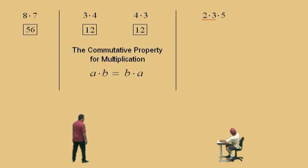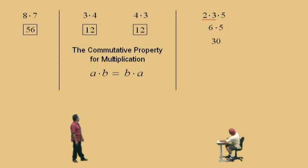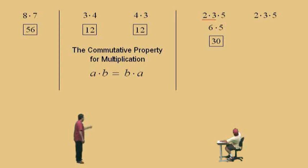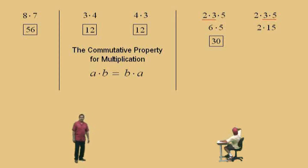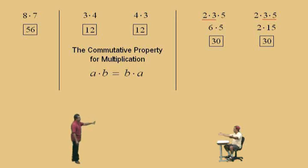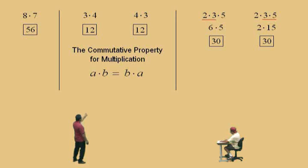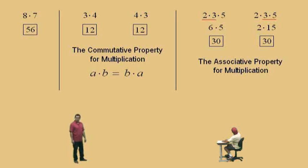We're going to work left to right. What's 2 times 3? 6. Bring down your 5. What's 6 times 5? 30. Now watch this — in this next attempt, we're going to do the 3 times 5 first. What's 3 times 5? 15. Bring down your 2. What's 2 times 15? 30. Notice both answers are equal to 30. In the first we did 2 times 3; in the second we did 3 times 5. This demonstrates the associative property for multiplication.